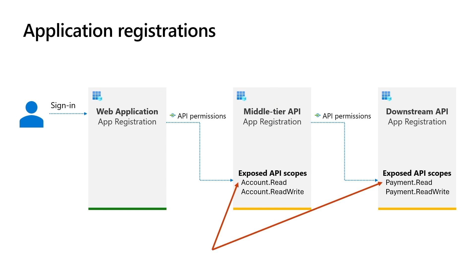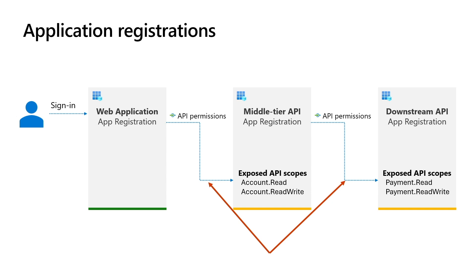Once the APIs are registered, you expose scopes or permissions to other applications and APIs. In this example, the middle tier API exposes 'account.read' and 'account.readwrite', and the downstream API exposes 'payment.read' and 'payment.readwrite'. Finally, you configure what permissions an application can act on the user's behalf. The application is granted permissions to call the middle tier API, and the middle tier API is granted permissions to call the downstream API.